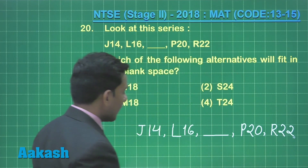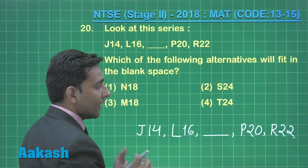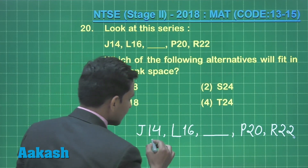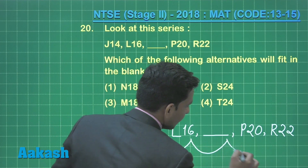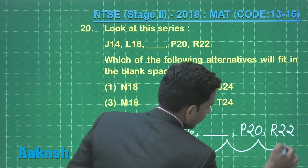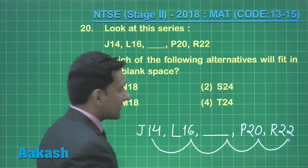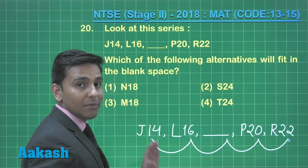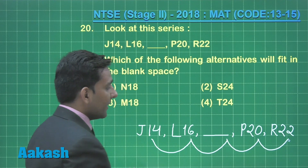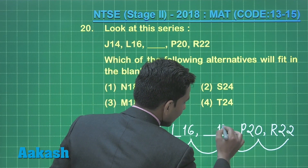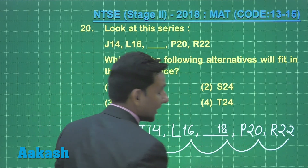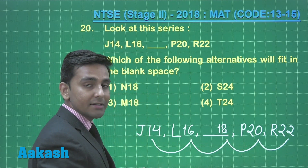We can see that the numbers 14, 16, 20, 22 are consecutive even numbers. That means the number in the missing term will be 18, because 18 is the next even number that comes after 16.